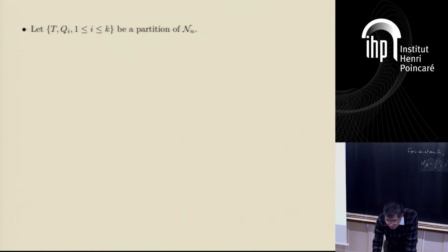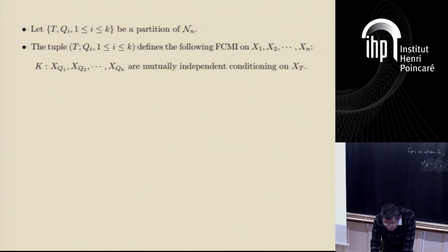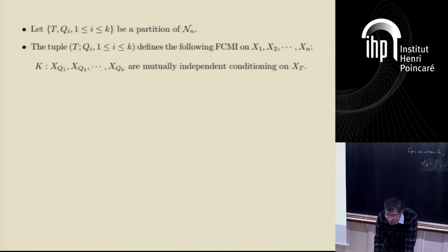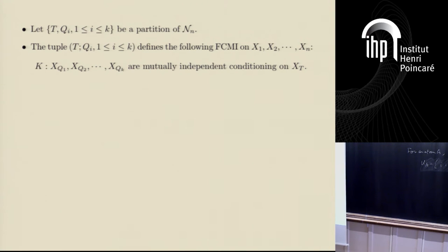Now we consider T and Qi, i from 1 up to k, as a partition of the set of all indices. We use the notation T semicolon Q1, ..., Qk to define an FCMI on X1, X2, ..., Xn. This tuple denotes the FCMI k, which says that XQ1 up to XQk are mutually independent conditioning on XT.